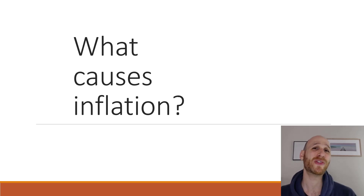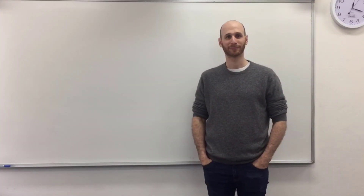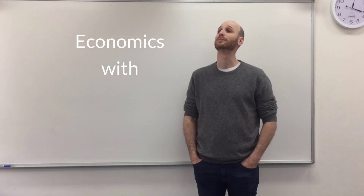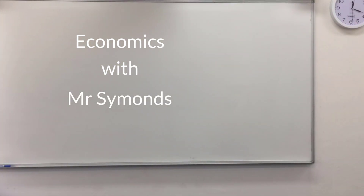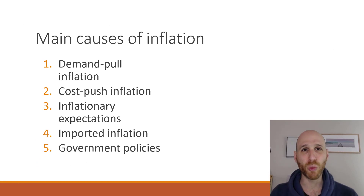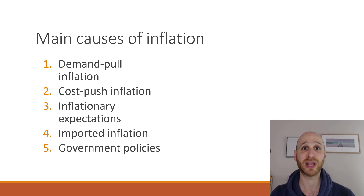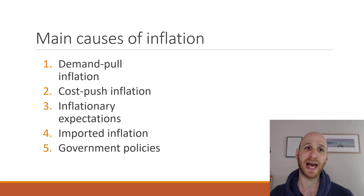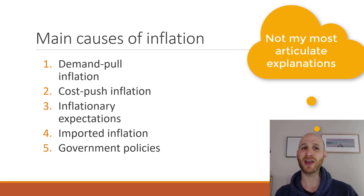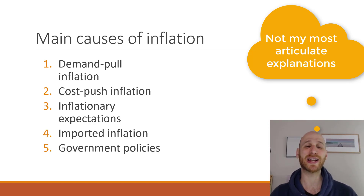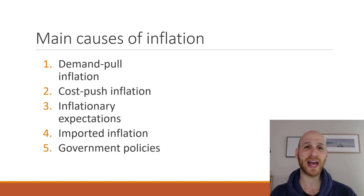Hi, I'm Mr. Simons and in this video we're going to look at what causes inflation. There are five different causes we're going to look at: from the demand side, the supply side, from people's thinking side, from the overseas side, and also from the government side. We're going to tackle each of these five throughout this video.